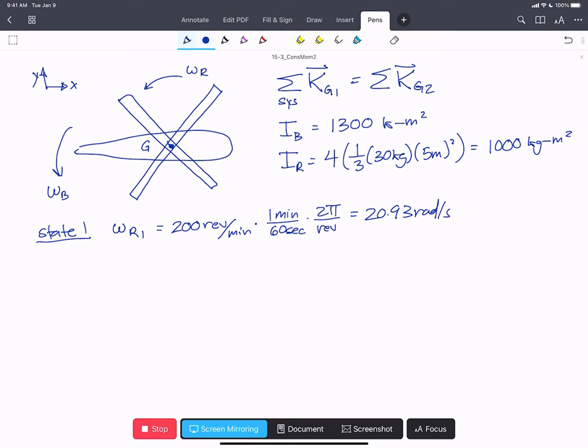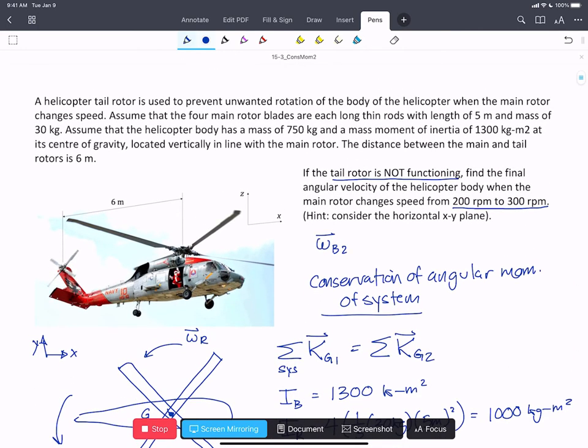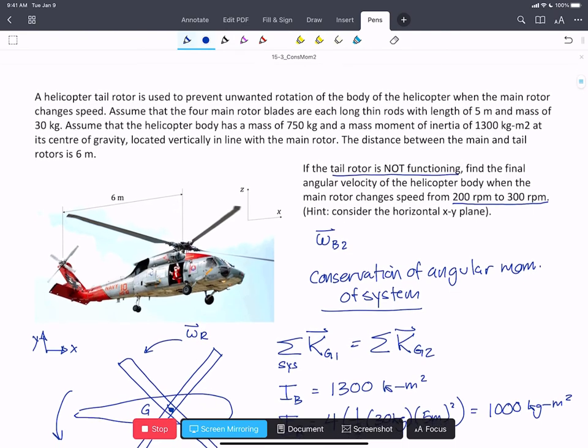So we can say that also, omega of the body at state one is zero. So we assume that it starts from rest.